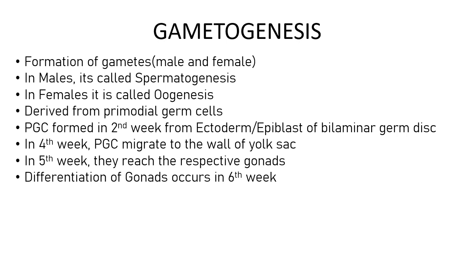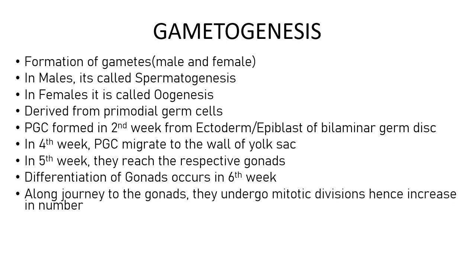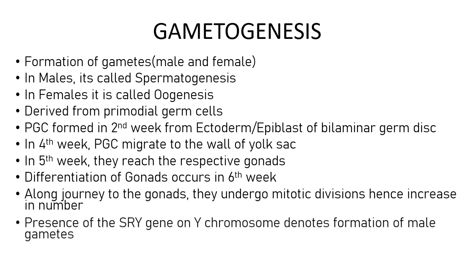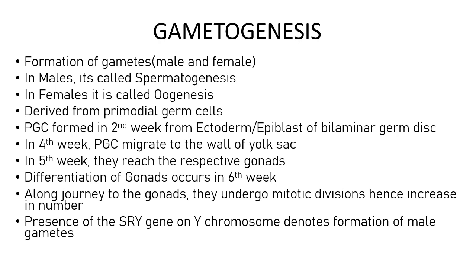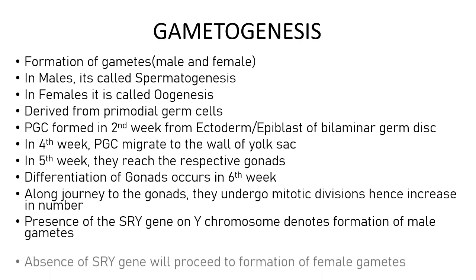Along the journey they are proliferating and increasing in number. In terms of differentiation of the gonads, it is simply via the presence of a gene known as the SRY gene, which is only present on the Y chromosome. If you have the Y chromosome, then biologically you are male. This gene is only encoded on the Y chromosome, so absence of this gene will denote that the embryo will be female — meaning the gonads will have female characteristics due to absence of the SRY gene.